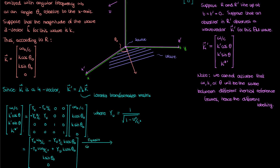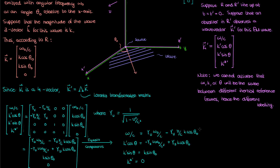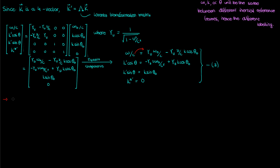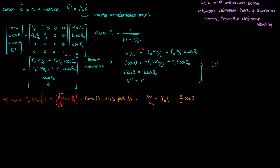Performing the matrix multiplication gives the right-hand side of the matrix equation. Equating individual components gives us a set of four equations, which I'll call equations 3. We simplify the first equation by multiplying both sides by c and factoring out gamma and omega-naught on the right-hand side. From equation 1, since we're dealing with light, the ratio omega-naught over k-naught equals the speed of light c.